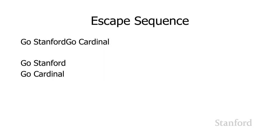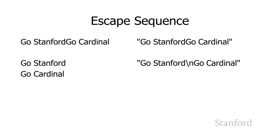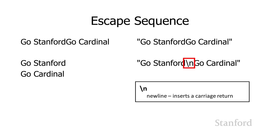So how am I going to fix this? Up at the top we have what we ended up with, and down at the bottom we have what we want. If we represent these as strings, the first is 'Go Stanford Go Cardinal' on one line. The second has 'Go Stanford \n Go Cardinal'. That \n is what we refer to as an escape sequence — in this particular case, \n represents a new line, which inserts a carriage return.